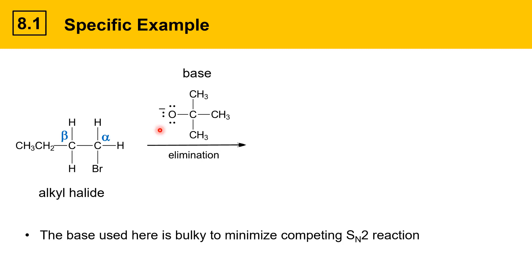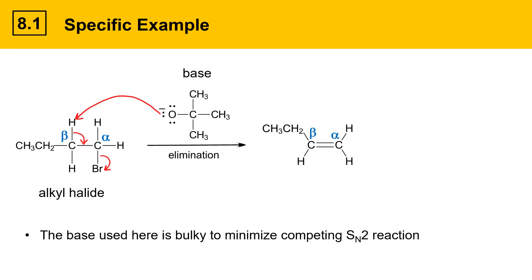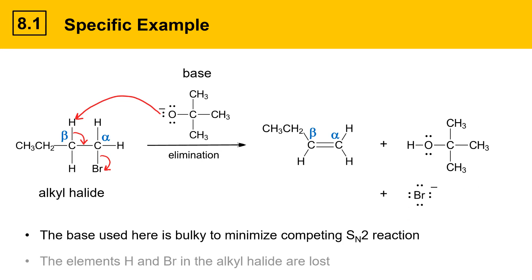The bulky base makes it less likely that this species will act as a nucleophile, and more likely that it will just act as a base. The base grabs the proton off the beta position. The electrons shift to form a new carbon-carbon double bond between alpha and beta, and the leaving group leaves. That gives a new alkene with a new carbon-carbon double bond between the alpha and beta positions. The base has become a conjugate acid having picked up a proton, and the leaving group Br⁻ has left. The elements of H and Br are lost from the alkyl halide, and those turn up in the products in the acid-base product.